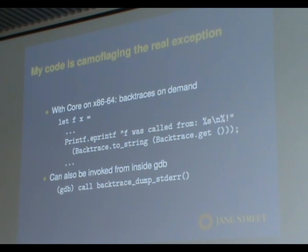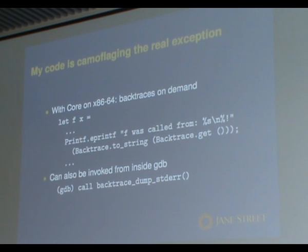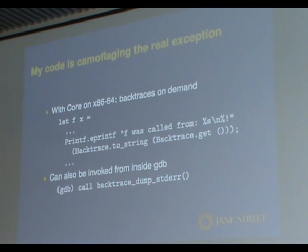You might not have an exception that comes out correctly at the end — an exception may have happened in the middle of a program, been caught, something else happened, and then triggered another one, so you've lost the original exception flow. Something we provide in Core, which only works on 64-bit x86 at the moment but could be ported, is a means of actually getting the backtrace right now. You get a proper backtrace including bits through C code, and you can turn that into a string and wrap it inside some sort of error result. You can also call this function from GDB while the program is still running.